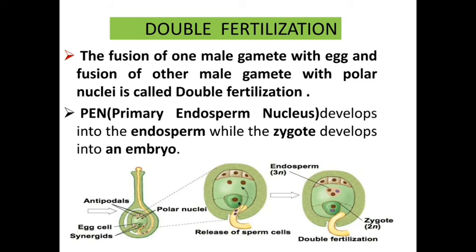In summary, double fertilization involves one male gamete fusing with the egg cell and the other male gamete fusing with the polar nuclei. These two fusions together are known as double fertilization. After double fertilization, the primary endosperm nucleus develops into endosperm while the zygote develops into an embryo.